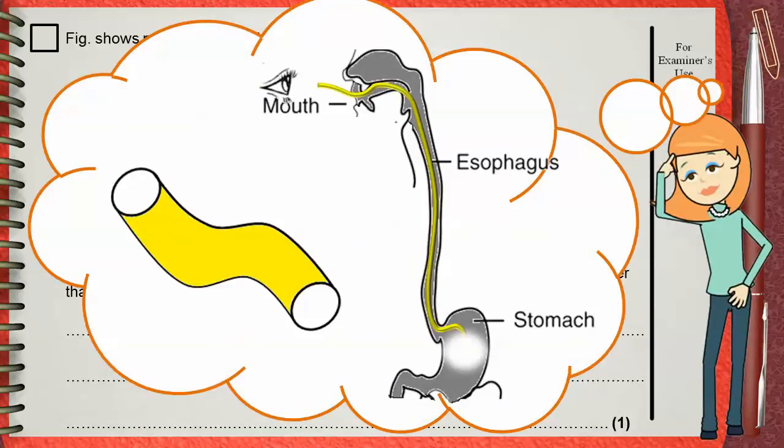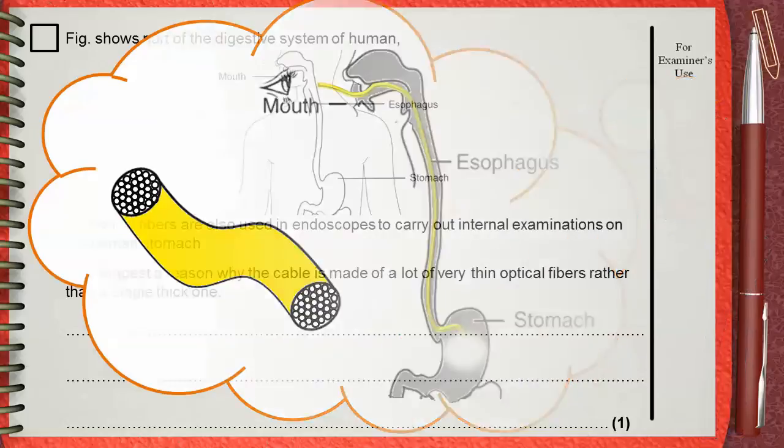The optical fiber is not one single rod as we see. This is just to understand. Optical fibers are made of many small thin optical fibers, not only one, and this has some benefits. Let's see a few of them.